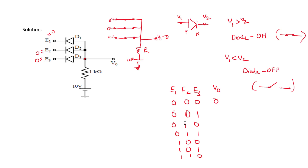Suppose any one input is logic 0 — say E1 equals 0. Then that diode is short-circuited, while the other diodes are open-circuited. Since there is a short circuit from V0 to 0 volts through the conducting diode, the output V0 is still 0. In all cases where any input is 0, the output will be 0.